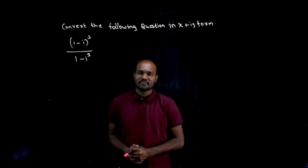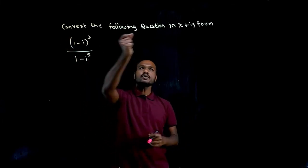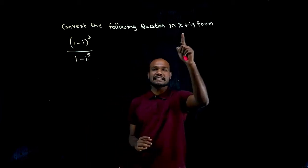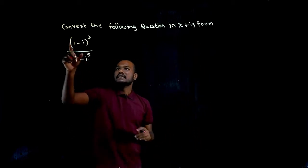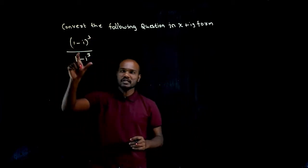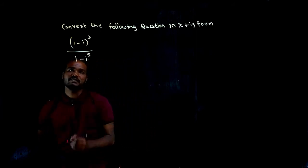What is given in the question? We have to convert the given expression in the form of x plus iy. What is given? A complex number.